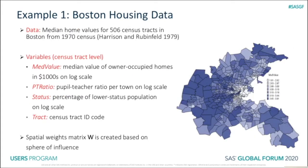Now let's look at two examples. In the first example, we consider a dataset that contains median home values for 506 census tracts in Boston. Four variables in this dataset are selected for the analysis. Our dependent variable, medValue, refers to the median value of owner-occupied homes in 1,000 US dollars, measured on log scale. Two explanatory variables are PT ratio and status, both measured on log scale. PT ratio refers to pupil-teacher ratio per town, and status refers to percentage of lower status population. Tract is the variable that refers to census tract ID code. The figure on the right panel plots medValue, from which we can see that median home values for neighboring census tracts seem to be similar, which might suggest some kind of spatial dependence in the data.